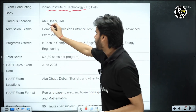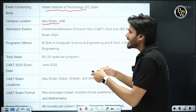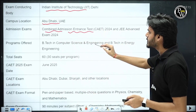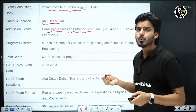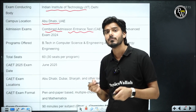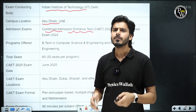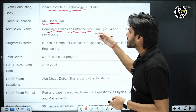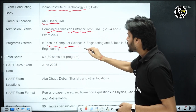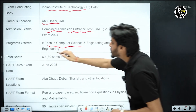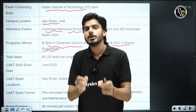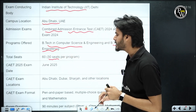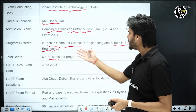The campus location is Abu Dhabi, UAE. The admission exam is CAET — Combined Admission Entrance Test. All people who want a seat in the next batch of 2025 have to write the exam in 2025. The programs offered are BTech in Computer Science and Engineering and BTech in Energy Engineering — two programs in this temporary campus of IIT Delhi, Abu Dhabi. Both programs will have 30 seats each, 60 in total.